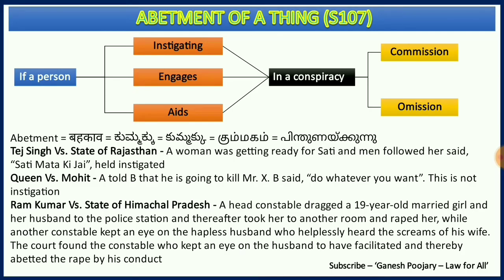Abetment itself is not an offense, but if such abetment is done for committing a certain offense, then abetment also becomes an offense. Abetment can be done by a single person to many people, or by many people to a single person. A single person can instigate, engage, or aid many people for an offense, or many people can instigate, engage, or aid one person to commit an offense.